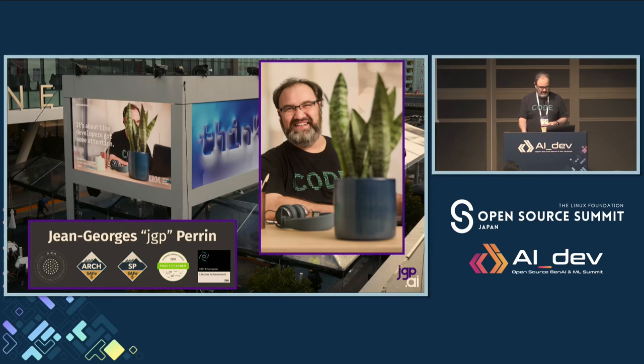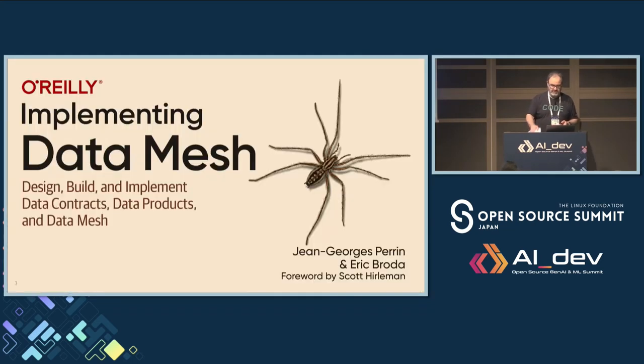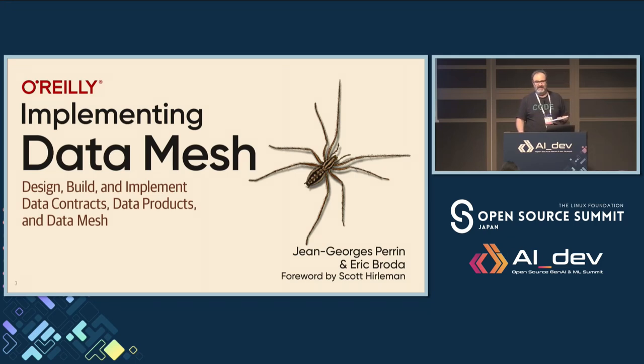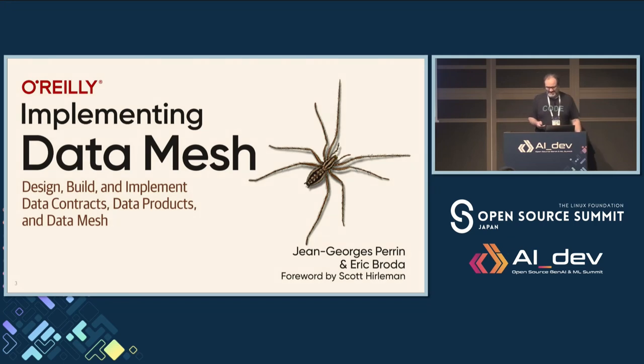I'm a lifetime IBM champion — there are about 30 of them in the world, so it's something I'm a little bit proud of. I'm wearing the same shirt so you can recognize me more easily. I wrote a few books on data engineering and architecture. Recently I published 'Implementing Data Mesh,' which is about a month old. The first smart question gets a book, the second gets another, and I've got two extra. Prepare your smart questions for the end — and I'm the judge. I didn't say it was fair.